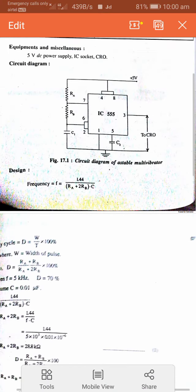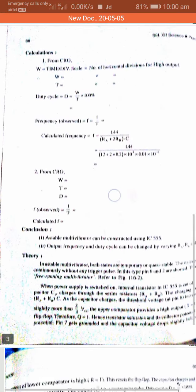An astable multivibrator is used to produce a continuous stream of rectangular clock pulses. Clock pulse generators are necessary in PAM (Pulse Amplitude Modulation), PPM (Pulse Position Modulation), and FSK (Frequency Shift Keying). The waveform is shown in the circuit diagram.